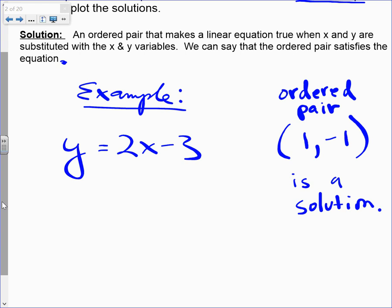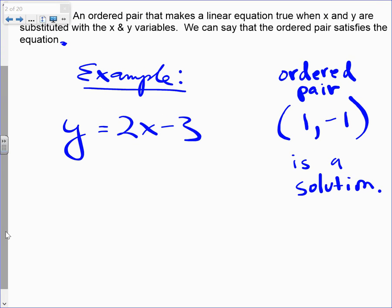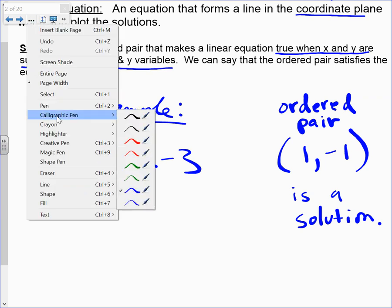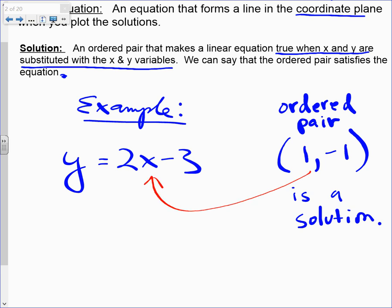So you've got the equation on the left side of your notes, and then go ahead and write, ordered pair 1, negative 1, is a solution. And I'm going to talk about why right now. Why is it a solution? Why is 1, negative 1 a solution? Well, look at what we read right here. An ordered pair that makes a linear equation true when x and y are substituted with the x and y variables. So watch. Wherever I see x, I'm going to replace x with that x coordinate. So I'll replace x with this, and I'll replace y with negative 1, and it'll result in a true statement. In other words, it'll satisfy.